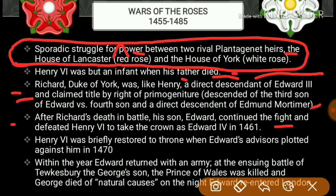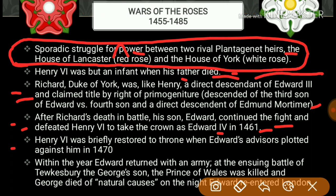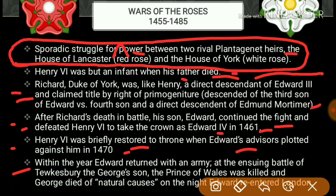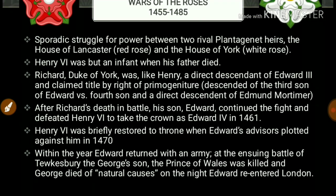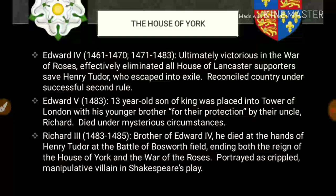After Richard's death in battle, his son Edward continued the fight and defeated Henry the Sixth to take the crown as Edward the Fourth in 1461. Henry the Sixth was briefly restored to the throne when Edward's advisors plotted against him in 1470. Within the year, Edward returned with an army. At the ensuing Battle of Tewkesbury, the Prince of Wales was killed, and Edward re-entered London.